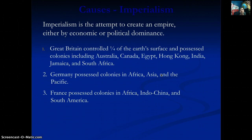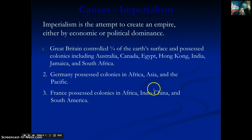Imperialism means creating an empire by taking over other countries through economic or political dominance. At this time, Great Britain controls one-fourth of the Earth's surface — from Australia to Canada to Egypt to South Africa. Germany has colonies in Africa, Asia, and the Pacific. France has colonies in Africa, Indochina, and South America. They're all competing for these territories, and that competition will eventually lead to war, because everybody always wants what somebody else has.